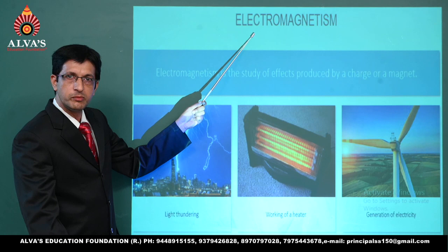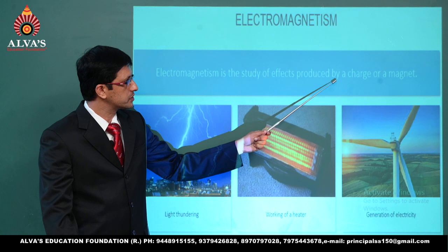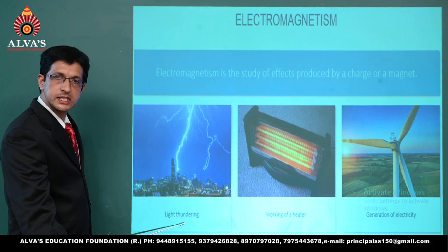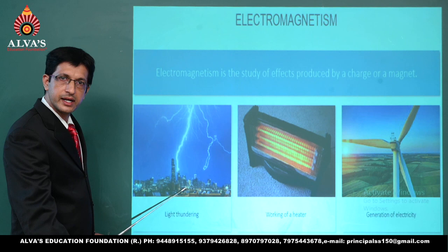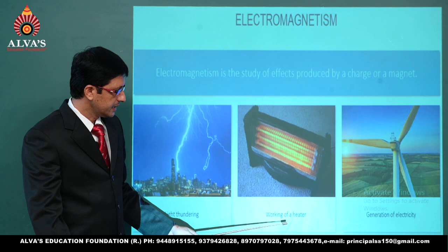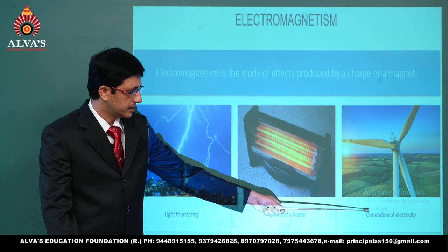Electromagnetism happens to be the study of effects produced by a charge or a magnet. Typical illustrations include a lightning stroke, which is very common during this season; secondly, a heater; and in the last picture, a windmill — a very common situation where generation of electricity takes place.